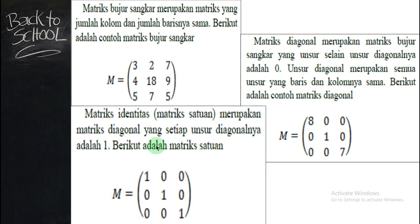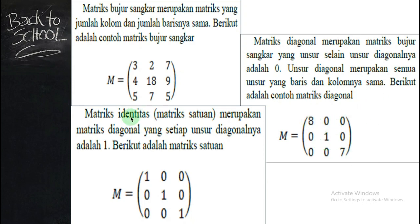Kemudian, menginjak matriks identitas atau matriks satuan. Matriks satuan merupakan matriks diagonal — padahal diagonal tadi persegi, jadi dia harus persegi. Matriks diagonal yang setiap unsur diagonalnya adalah 1. Jadi untuk diagonal utamanya, ini 1. Kalau untuk diagonal berbeda, tidak masalah — sama pun tidak masalah. Tetapi khusus pas angkanya 1, itu disebut dengan matriks identitas atau matriks satuan.